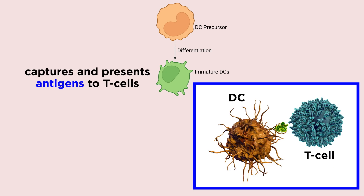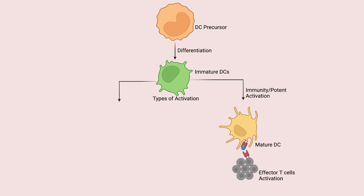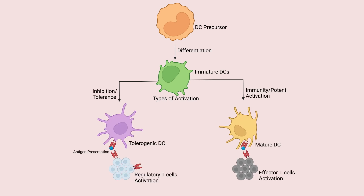Dendritic cells are capable of capturing and presenting antigens to the T cells of the adaptive immune system. The downstream effect of such antigenic presentation to T cells can lead to two outcomes: potent activation, known as immunogenicity, or inhibition, known as tolerance of effector immune functions.